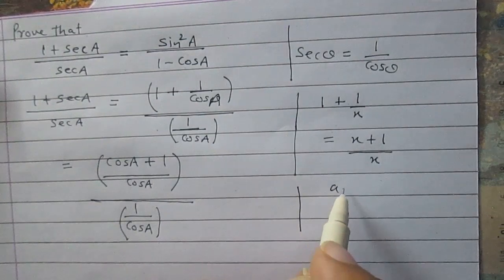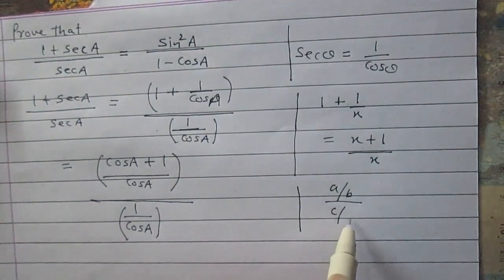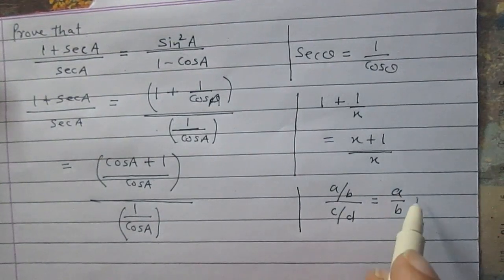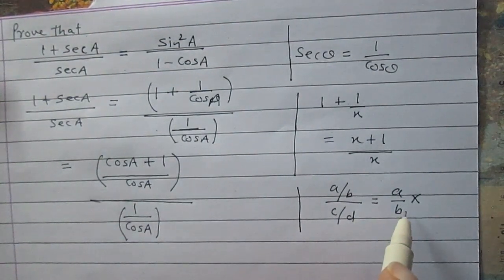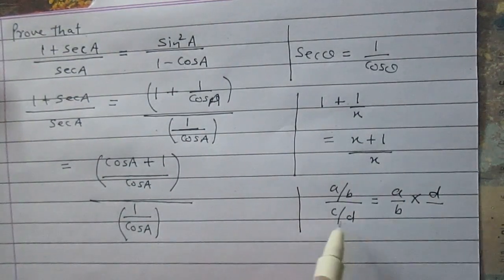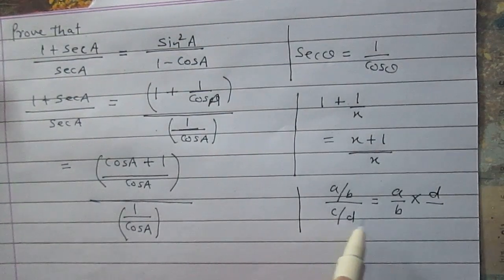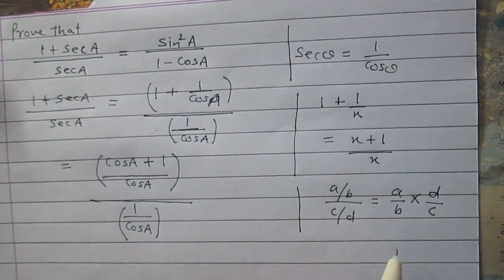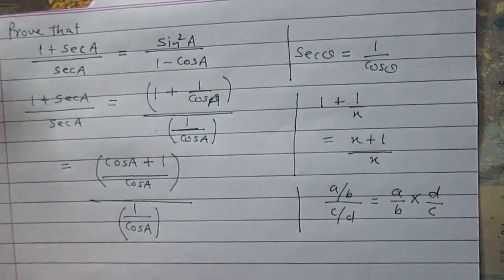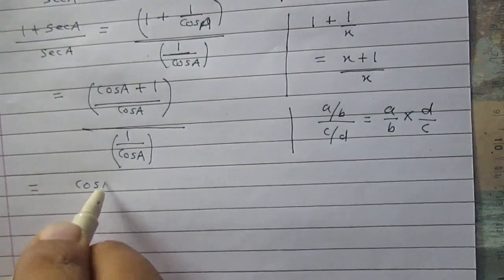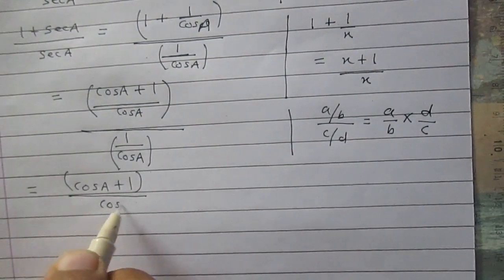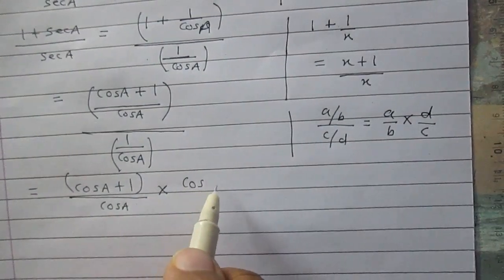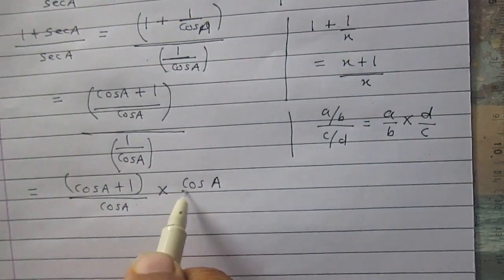Now this is a fraction in which both numerator and denominator are fractions — it is like (a upon b) divided by (c upon d). This simplifies as: the numerator a upon b is multiplied by the reciprocal of the denominator, which is d upon c. Applying the same here, the numerator (cos a + 1) divided by cos a is multiplied by the reciprocal of the denominator, which is cos a upon 1.